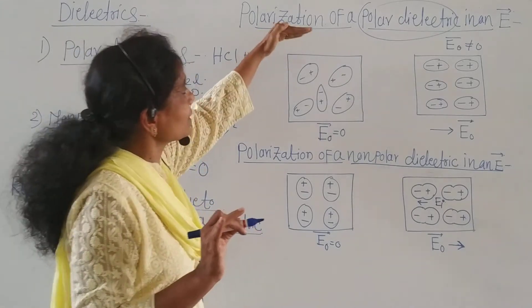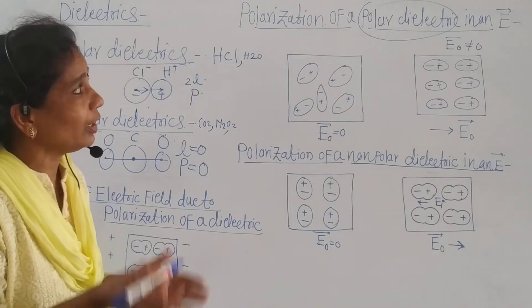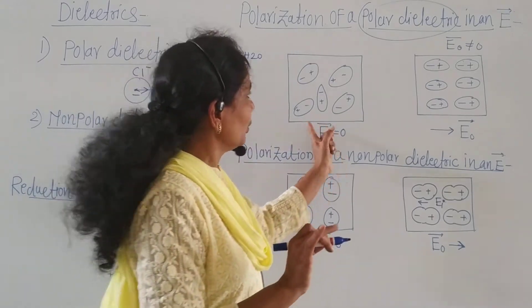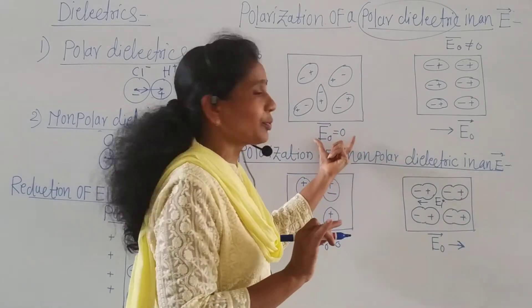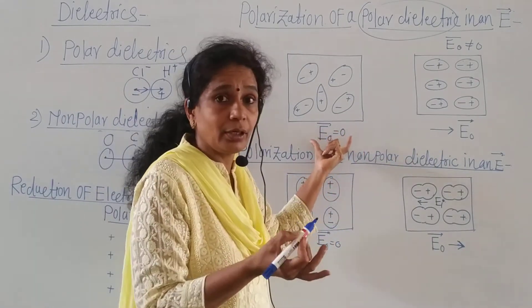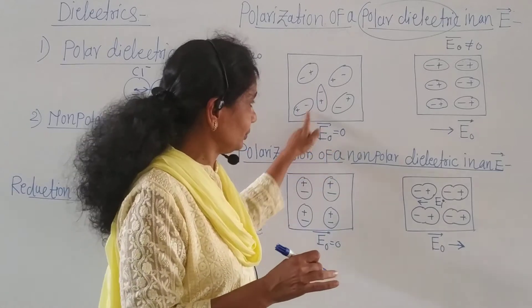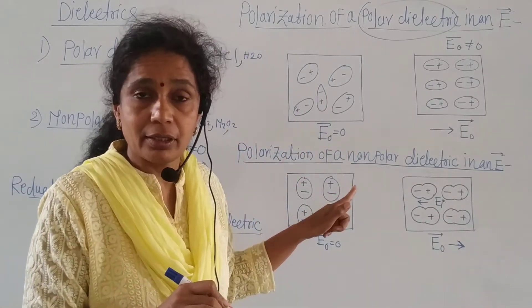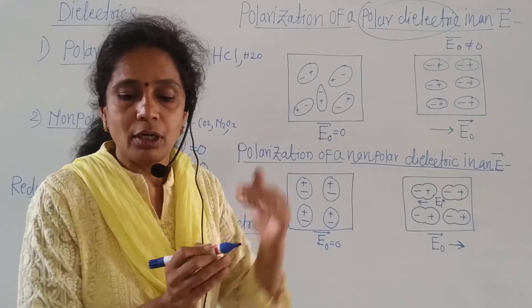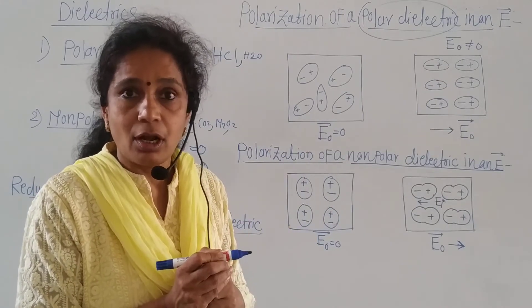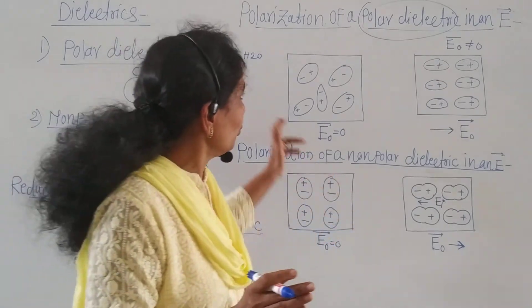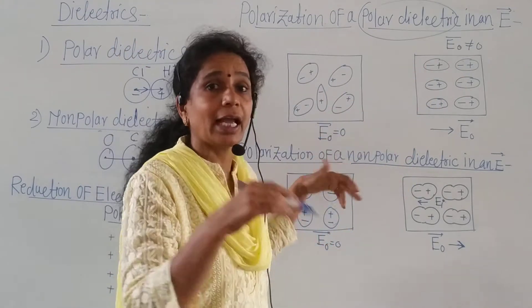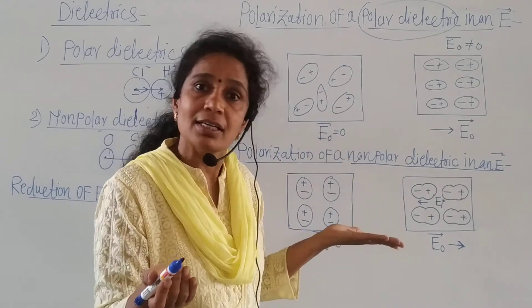Next, let us look at the polarization of a polar dielectric in an external field. In the first case — in the absence of an electric field — due to thermal agitations, all the dipole moments are randomly oriented, and therefore the net dipole moment is zero.